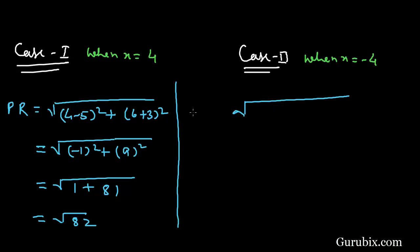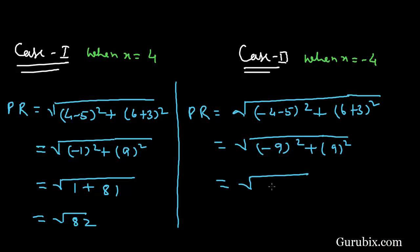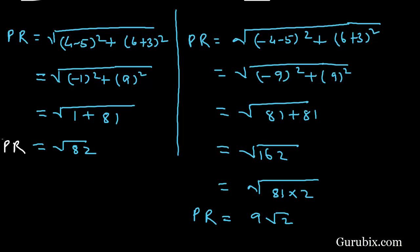In case 2, when x = -4: PR = √((-4 - 5)² + (6 + 3)²) = √((-9)² + 9²) = √(81 + 81) = √162 = √(81 × 2) = 9√2.